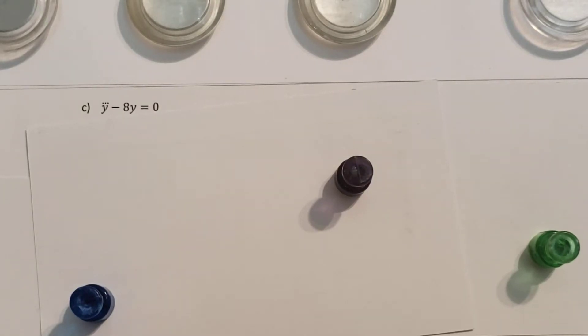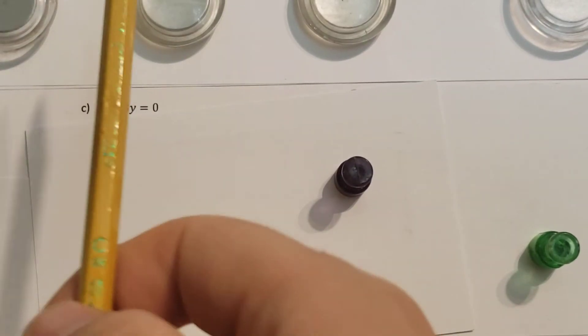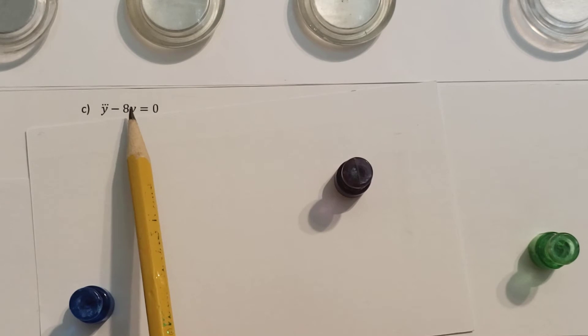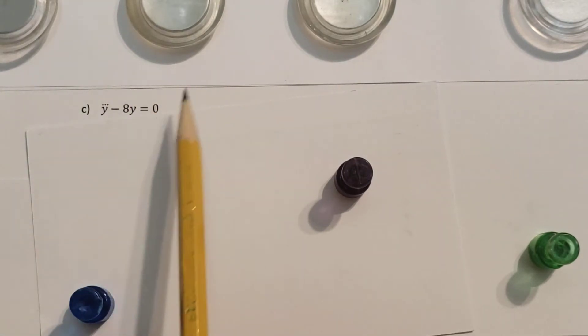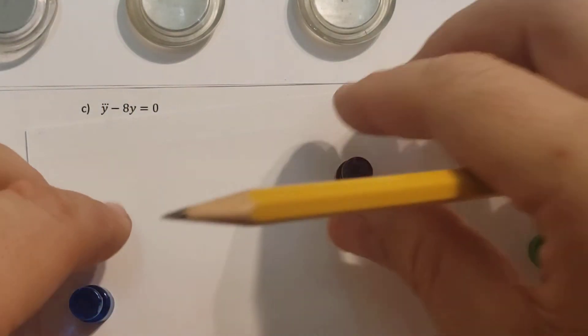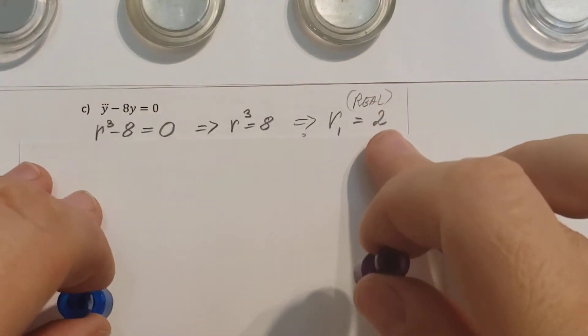All right, let's solve this differential equation. We have y third derivative, so there's three dots there, minus 8y equals 0. Now, there's nothing on the right-hand side, so it's homogeneous. That makes our life a lot simpler, so let's go ahead and find the characteristic equation for it.